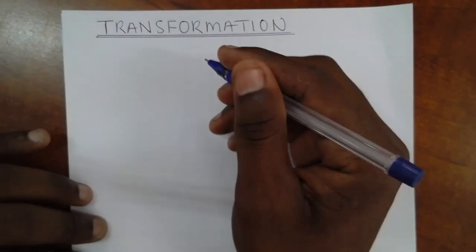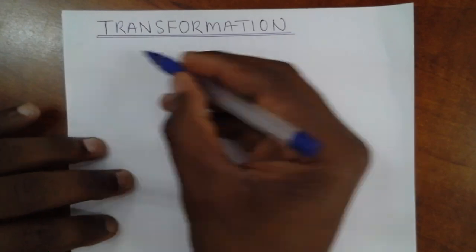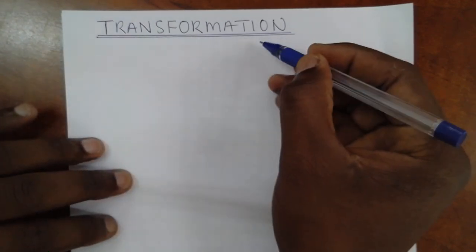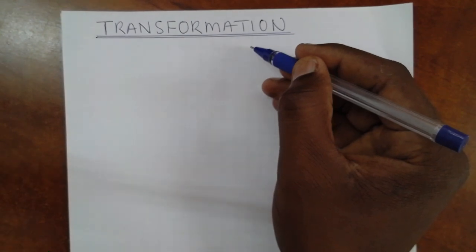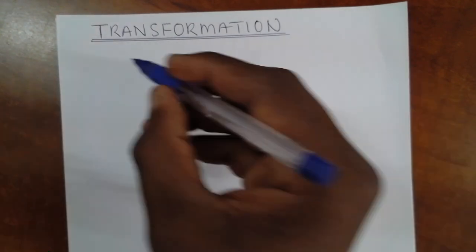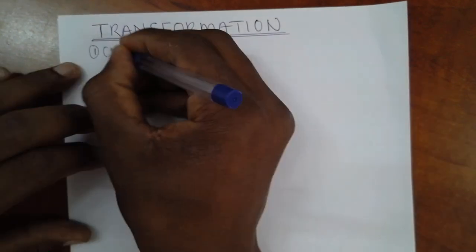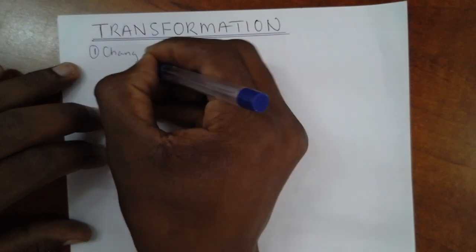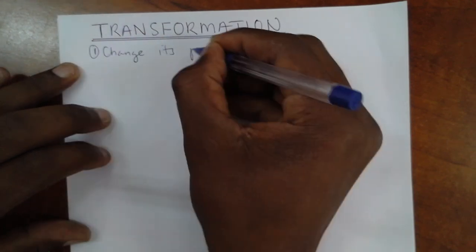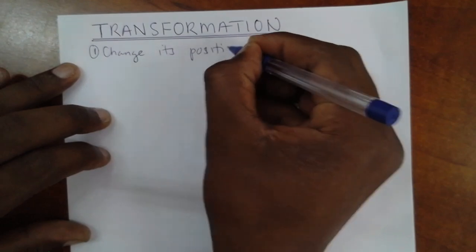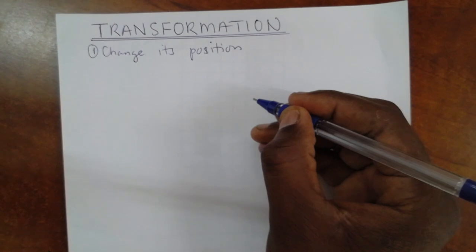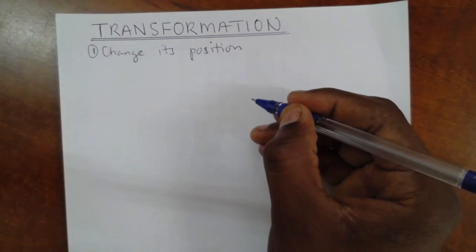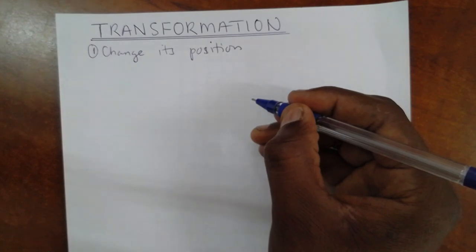Now back to transformation. The transformation in mathematics can carry two different meanings. To transform a shape, one is to change its position. That means the original look of the shape can remain as it was, but only the position where the shape was can change.